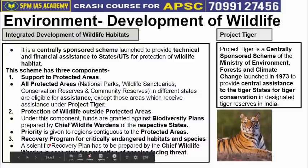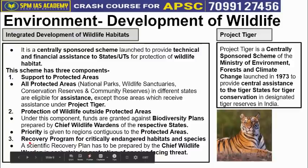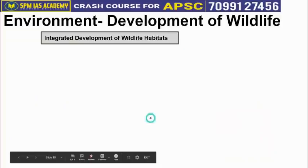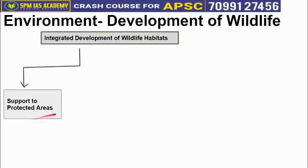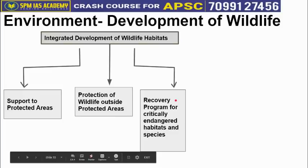The third component is the Recovery Program for Critically Endangered Habitats and Species. The Chief Wildlife Warden of a state submits a report to the National Board of Wildlife identifying species whose population is continuously declining. If that report is accepted, a special protection scheme is launched for that species under this third component. The three components are: Support to Protected Areas, Protection Outside Protected Areas, and Recovery Program for Critically Endangered Habitats and Species.